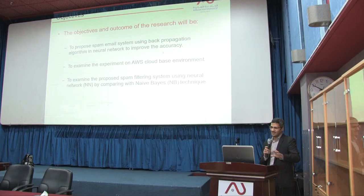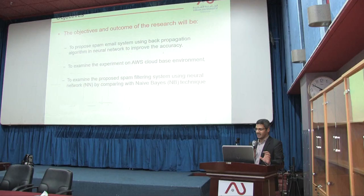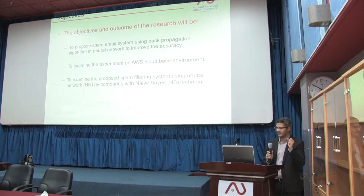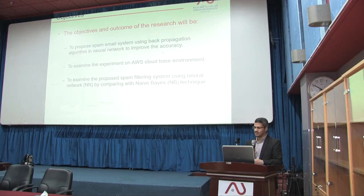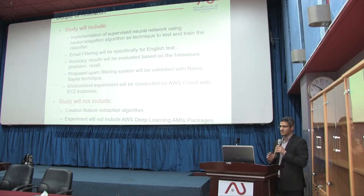I have three objectives to be implemented. I will propose a spam email system using backpropagation algorithm to improve the accuracy. My experiment environment will be in AWS, Amazon cloud-based environment, where I will examine the speed of response with different memory and CPU utilization. In addition, I will compare my results with a Naive Bayes classifier technique.